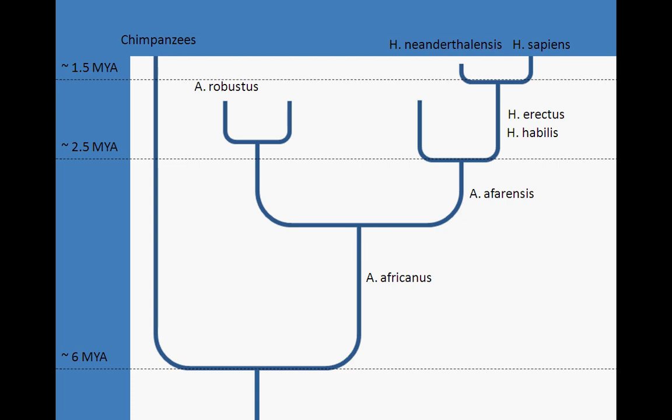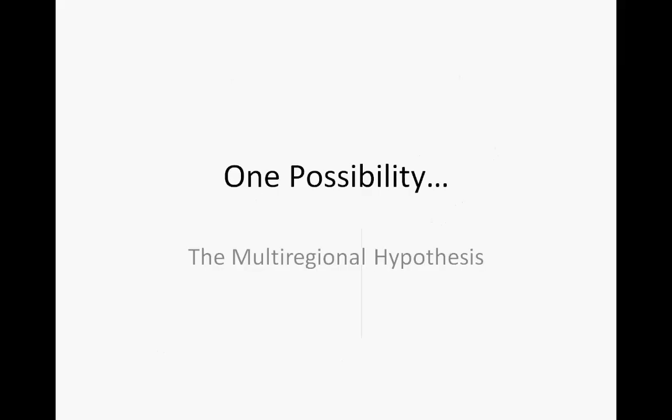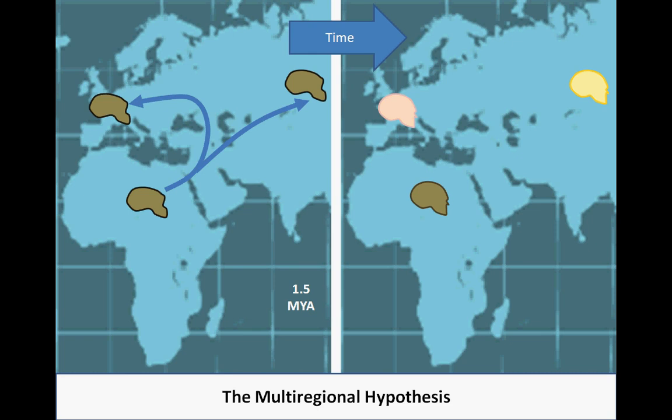However, the specifics of the transition between Homo erectus and Homo sapiens have been the subject of much debate. Specifically, there are two competing hypotheses which attempt to explain the evolution of modern humans. The multi-regional hypothesis proposes that when Homo erectus migrated out of Africa into Asia and Europe, one and a half million years ago, evolution leading to modern Homo sapiens began separately on each continent.